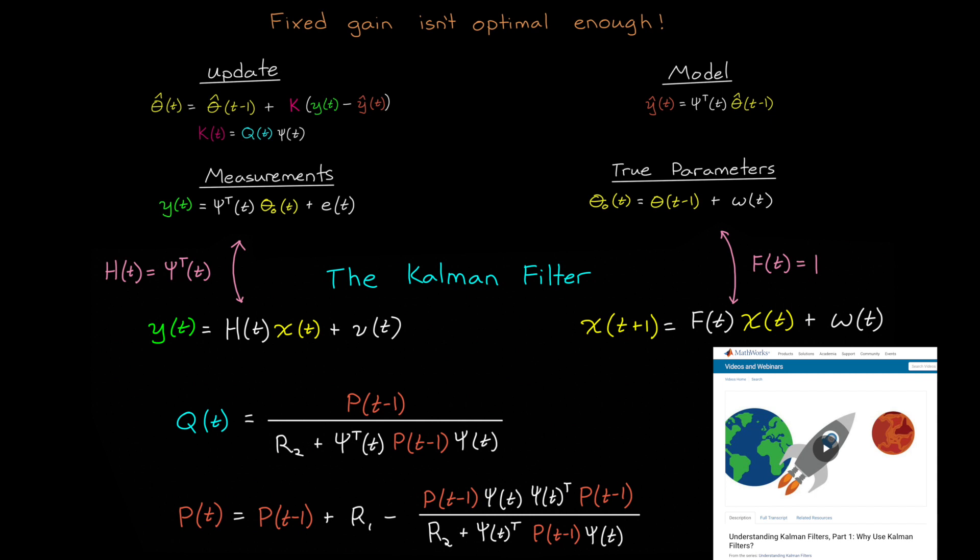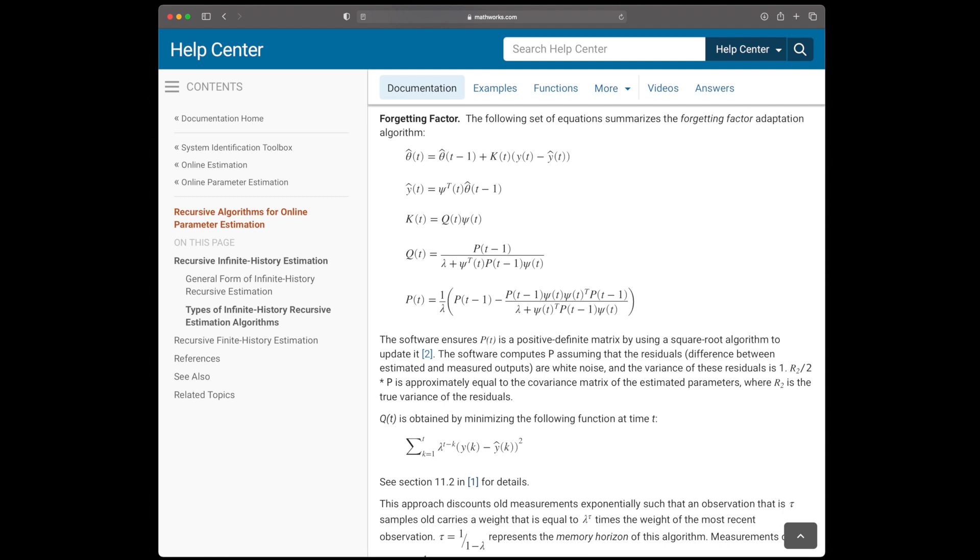Alright, you might notice that this video was heavy on the general concepts and light on the specific mathematics or applications. Plus, I didn't even cover many other popular online methods, like adding a forgetting factor into the infinite history algorithms so that old measurements are discounted exponentially, leaving just the newest measurements influencing the optimal result more heavily.